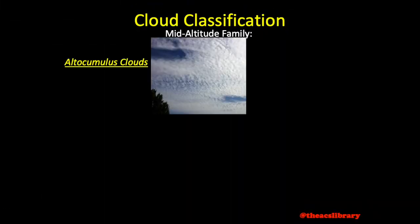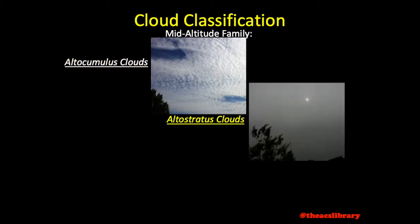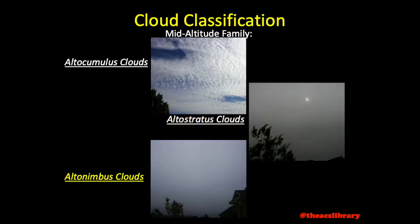The mid-altitude category is made up of altocumulus clouds, which have a wave pattern to them, and altostratus clouds, forming a veil over the sky and typically allowing only a small amount of sunlight through. And the nimbostratus clouds, named such because they drop rain — oftentimes these clouds do not allow sunlight to penetrate.